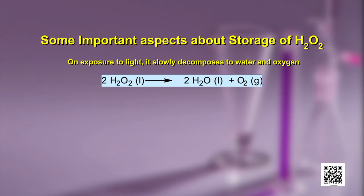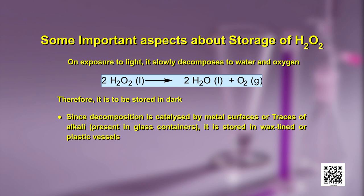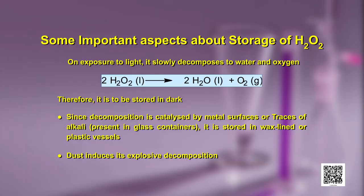After understanding the chemical reactions of hydrogen peroxide, let us now see some important aspects about its storage. On exposure to light, it slowly decomposes to water and oxygen. Therefore, it should be stored in dark. Since the decomposition is catalyzed by metal surfaces or traces of alkali present in glass containers, it is stored in wax-lined or plastic vessels. Another factor causing decomposition is dust.